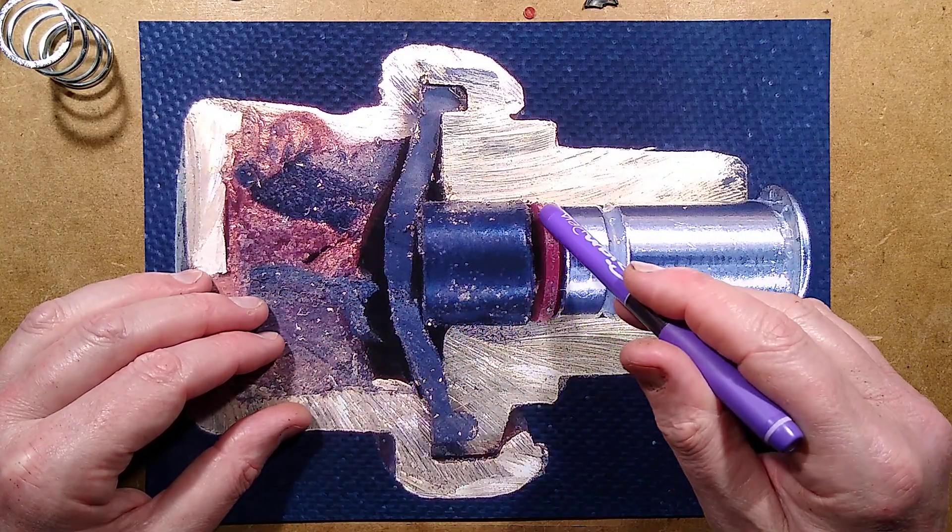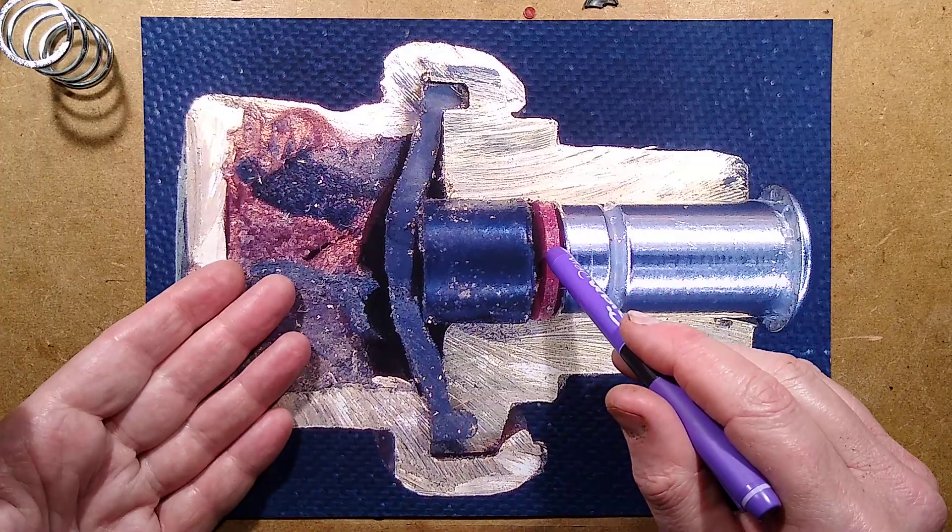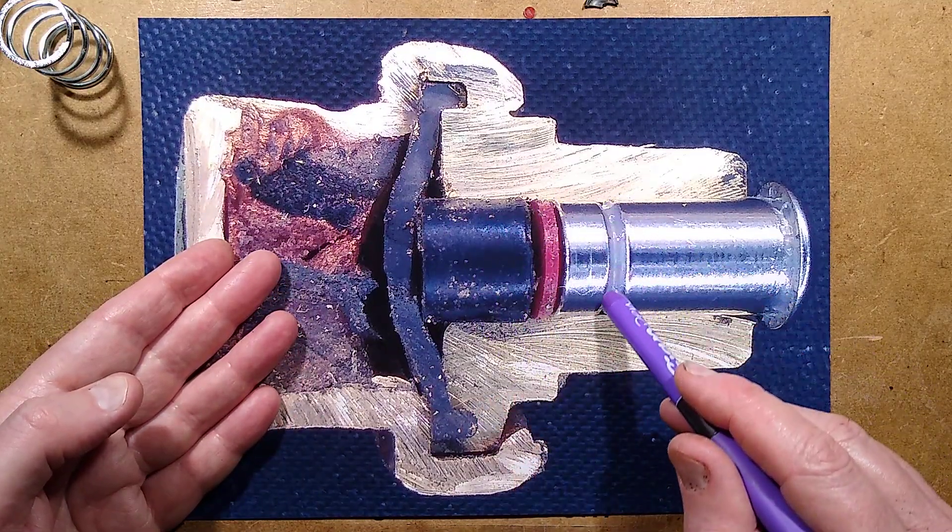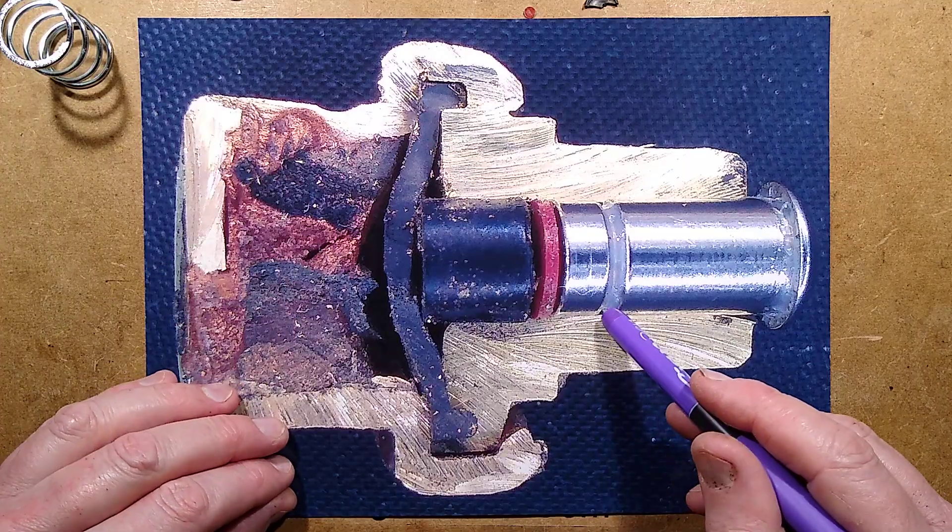And then there's this separator. I think maybe this is to keep everything intact in here when this is removed. There is a little groove I thought that might have been for a seal but I didn't see a seal.